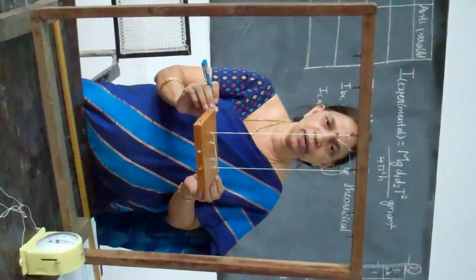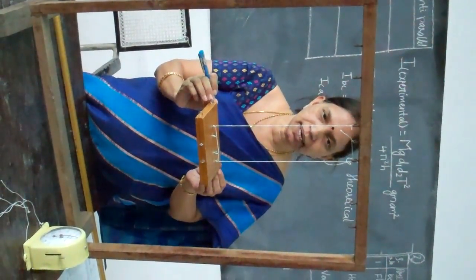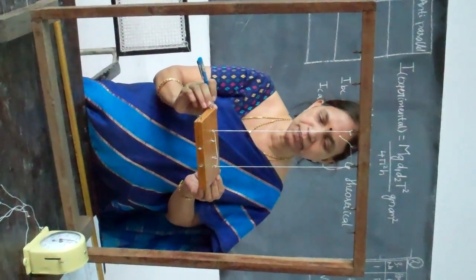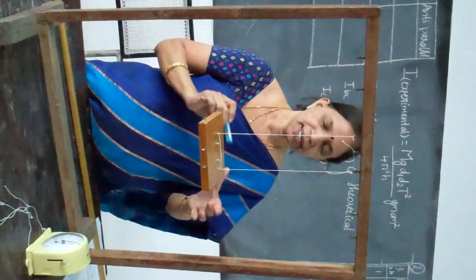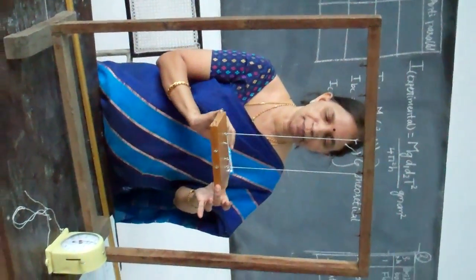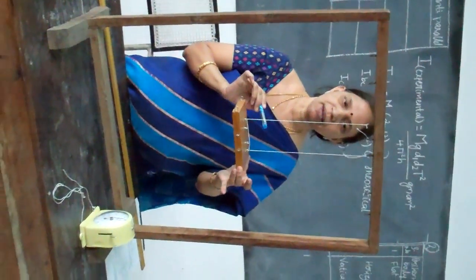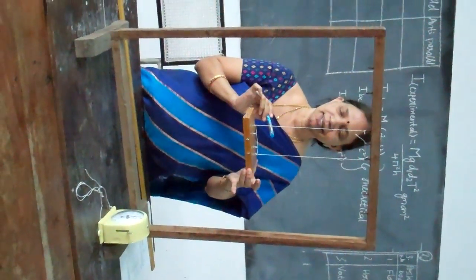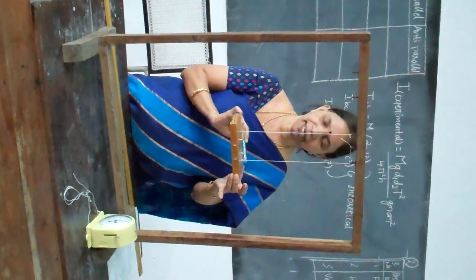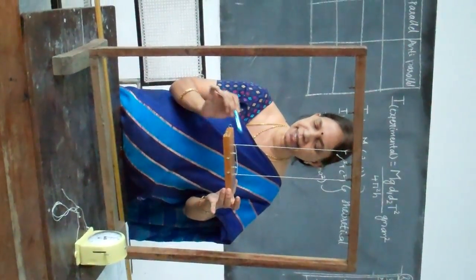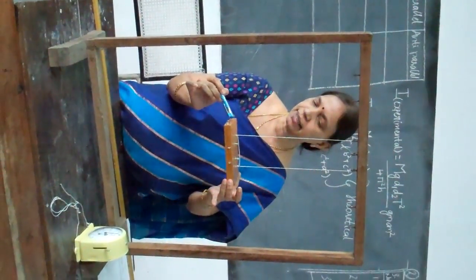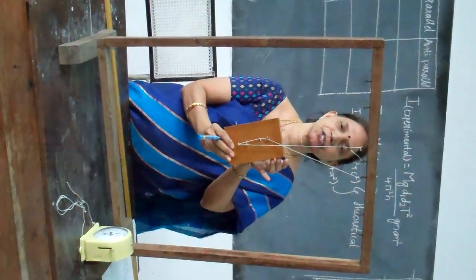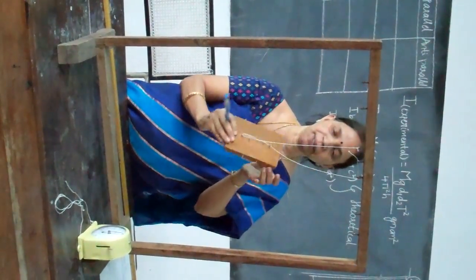To understand how to verify the perpendicular axis theorem and measure the moment of inertia. This is a rectangular lamina having different planes A, B and C. This is your AB plane, this is your BC plane, and this is your CA plane.